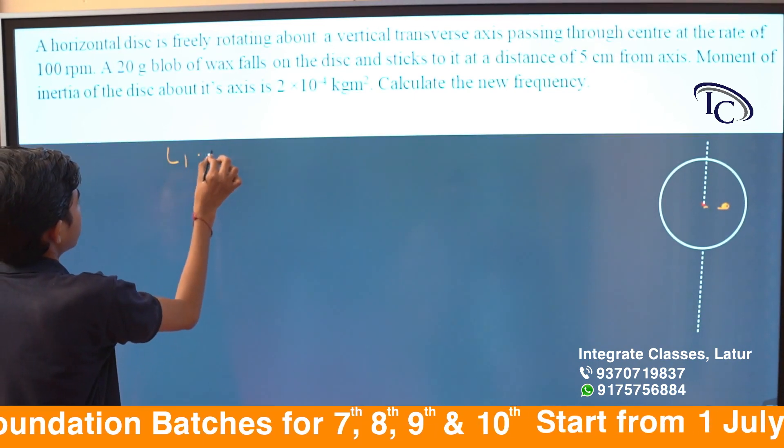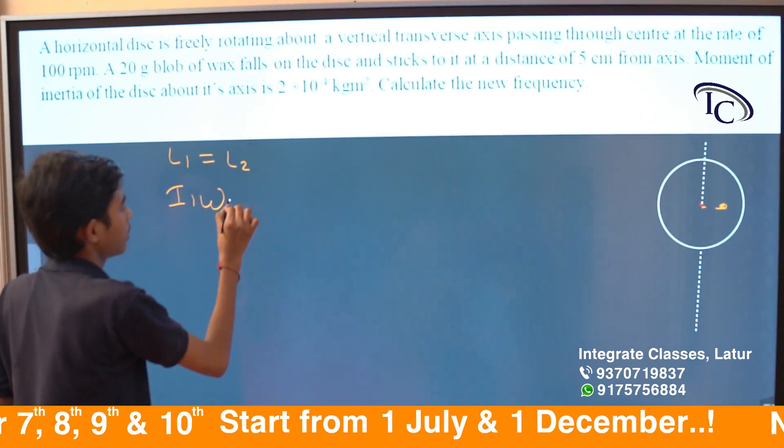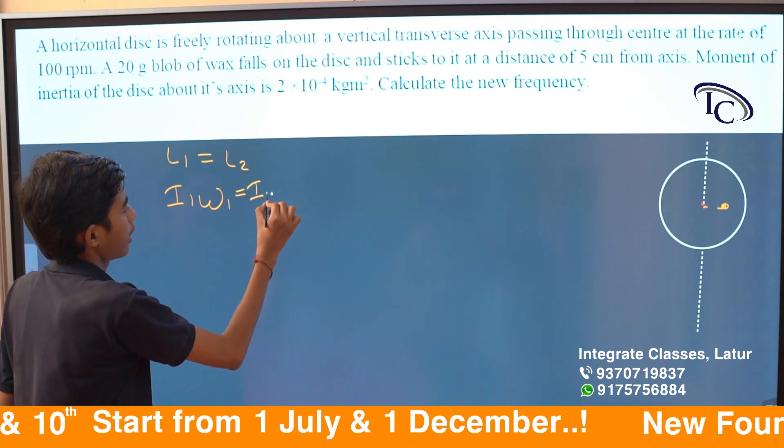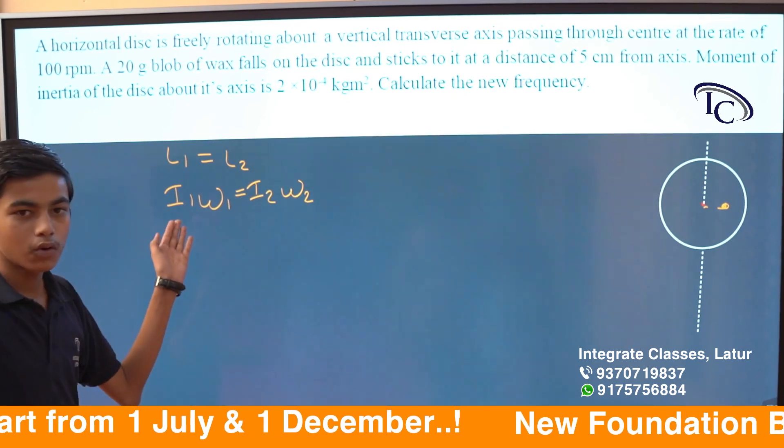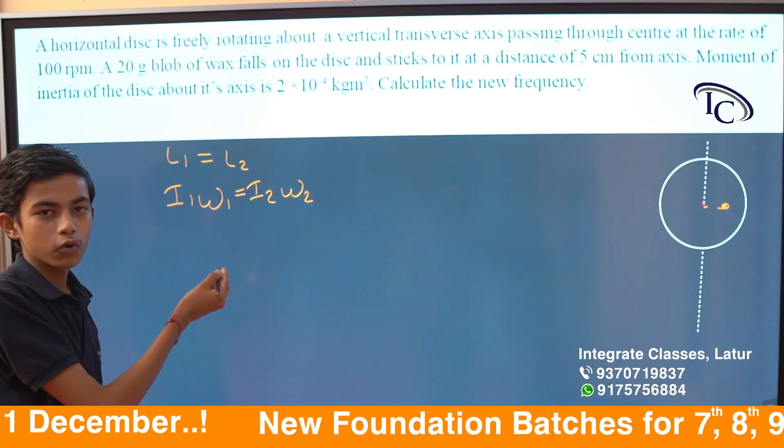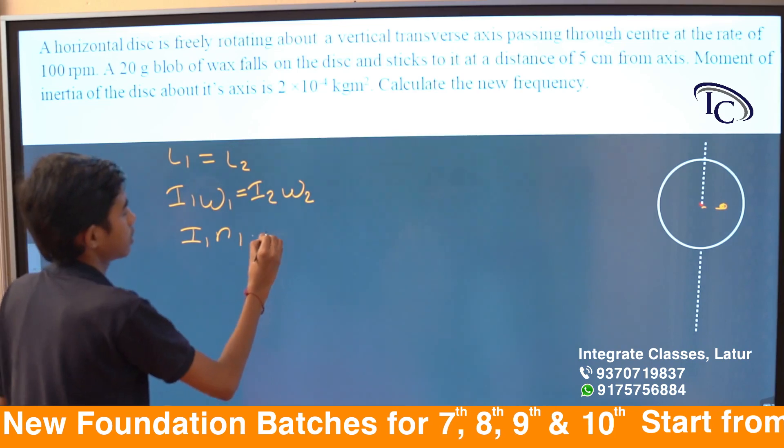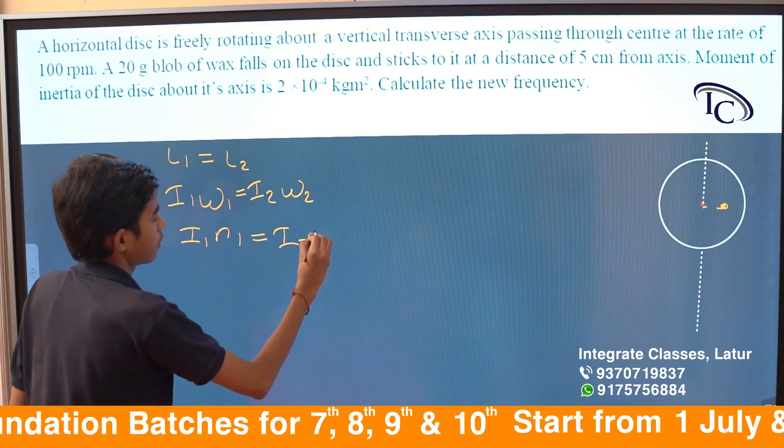L1 equals L2. I1ω1 equals I2ω2. ω1 = 2πn1, ω2 = 2πn2. Therefore, I1n1 equals I2n2.